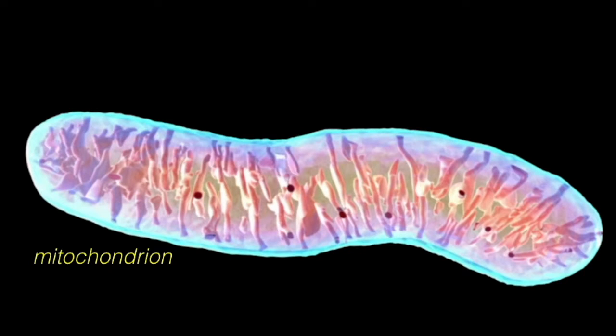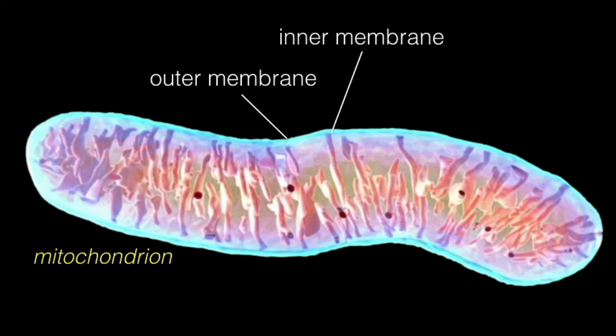Let's have a closer look at a mitochondrion. It is quite a special organelle, as it charges up when food molecules are broken down inside. A mitochondrion has two membranes, the outer membrane and the inner membrane, which form structures called cristae. The inside is called the mitochondrial matrix.